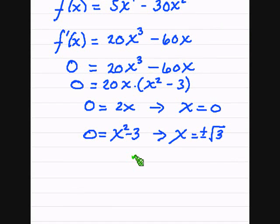And then what we're going to do is draw a number line and label zero, negative square root of 3, and positive square root of 3.